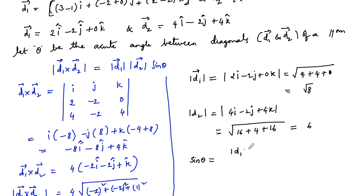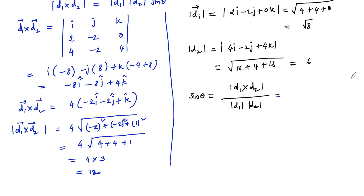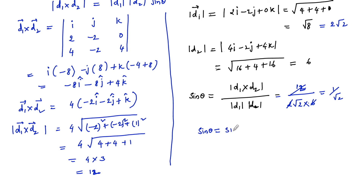Therefore, sine theta is equal to mod of d1 cross d2 divided by mod of d1 into mod of d2, which is 12 divided by 2 root 2 into 6, that is 12 divided by 12 root 2, which equals 1 upon root 2. Since sine pi by 4 is 1 by root 2, theta is equal to pi by 4. Therefore the acute angle between the two diagonals of the parallelogram is pi by 4.